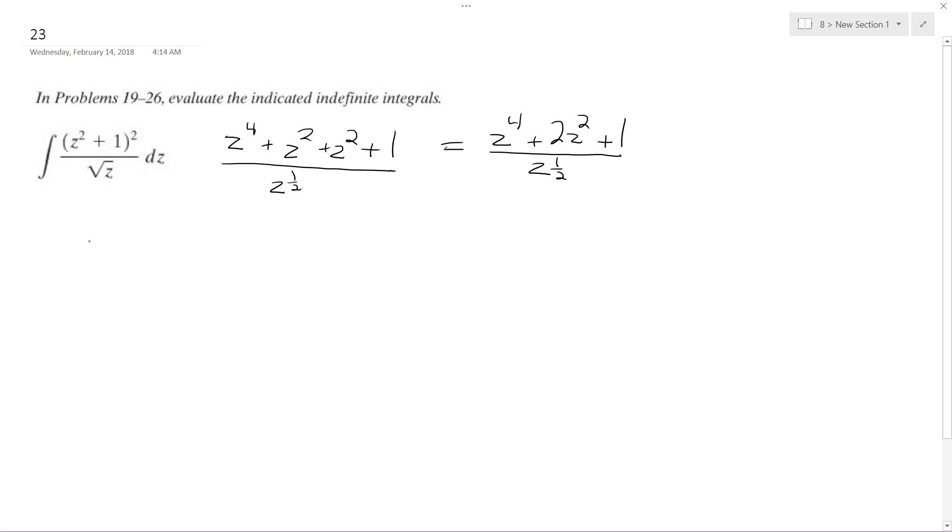So I'm going to divide through by z to the one half. So I'll be taking the integral of z and then this ends up being four so I turn it to eight so it ends up being seven over two I think. Yeah, seven over two plus two z raised to the three halves plus z raised to the negative one half.